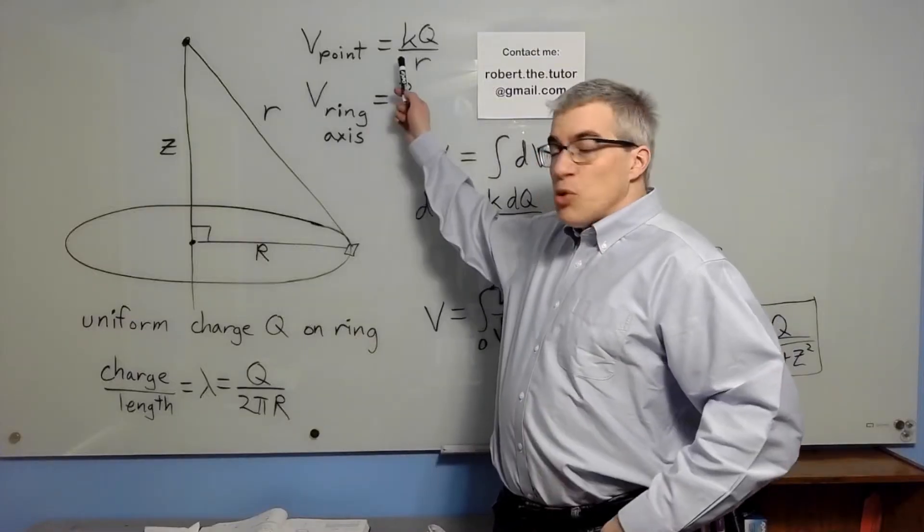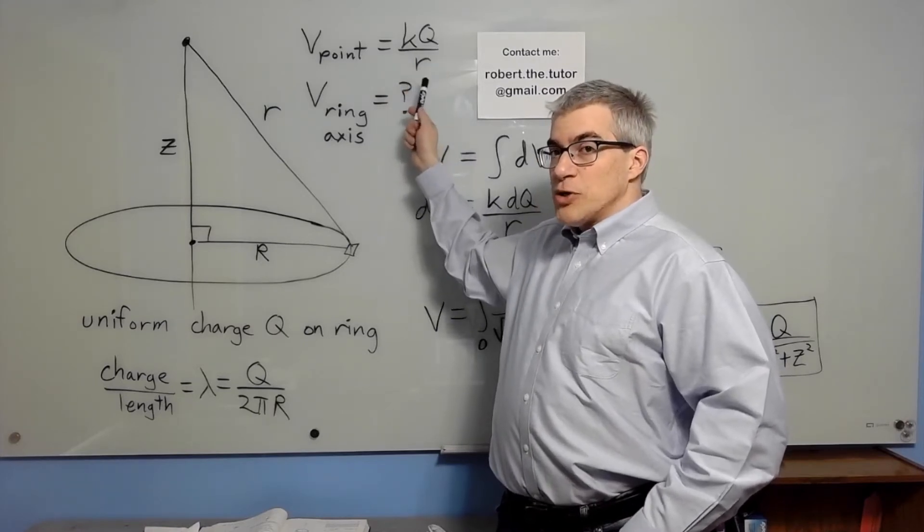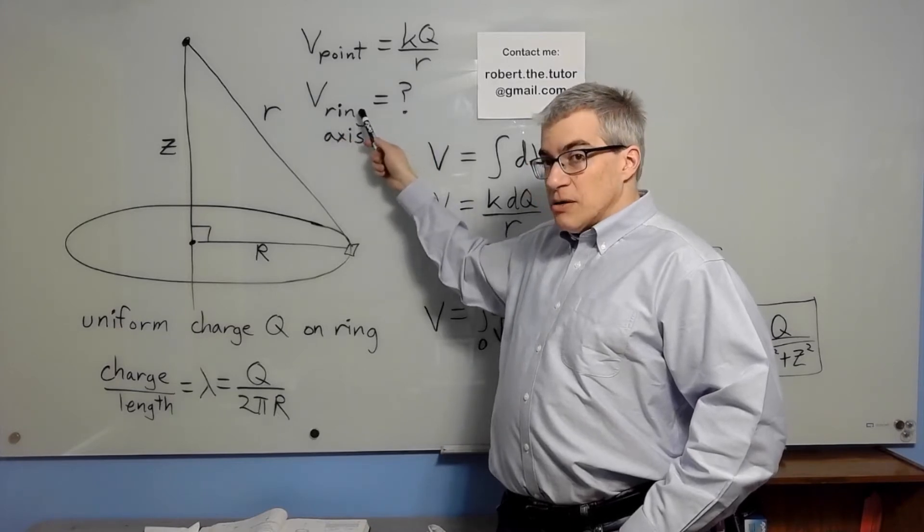We know the voltage of a point charge is KQ over R. R is how far you are from the charge. Let's find the voltage of a ring along its axis.